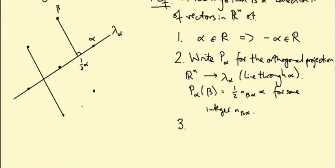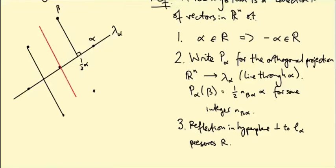Third, the reflection in the hyperplane orthogonal to the line L_alpha preserves R. It's a symmetry of the root system. So in this picture, let's draw it in red. Lambda alpha is this line. So the hyperplane I'm talking about is this red one. Reflection in that red hyperplane should preserve the root system. And indeed, that is a symmetry of this hexagon.